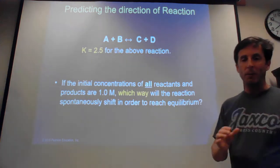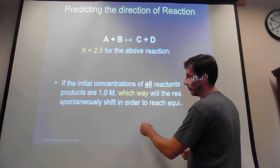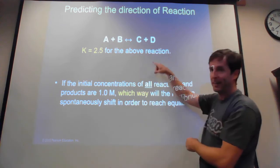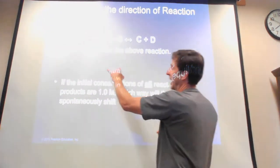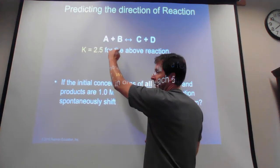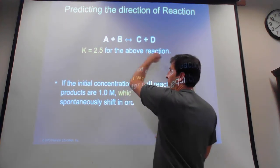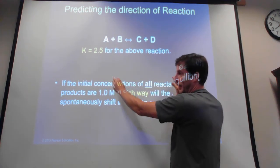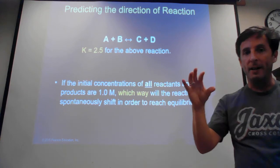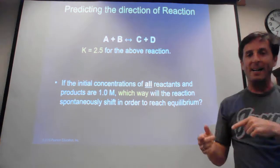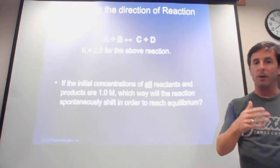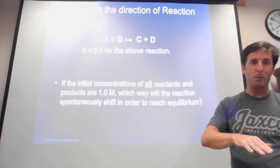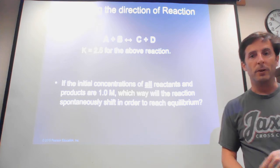We can then set up an ICE table: initial row is all ones. Since we're shifting right, the change row under A and B is −x each, and under C and D is +x each. From there we'd set up the equilibrium expressions, solve the quadratic for x, and find the equilibrium concentrations. The overall goal is to look at current concentrations, decide which way the reaction goes, apply that to the ICE table, and solve.